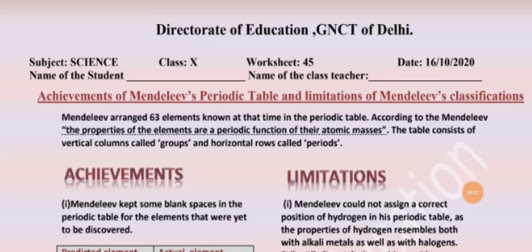Hello friends, today we will study Worksheet number 45, Science: Achievements of Mendeleev's Periodic Table and Limitations of Mendeleev's Classification. Today we will study Mendeleev's Periodic Table's achievements and limitations.